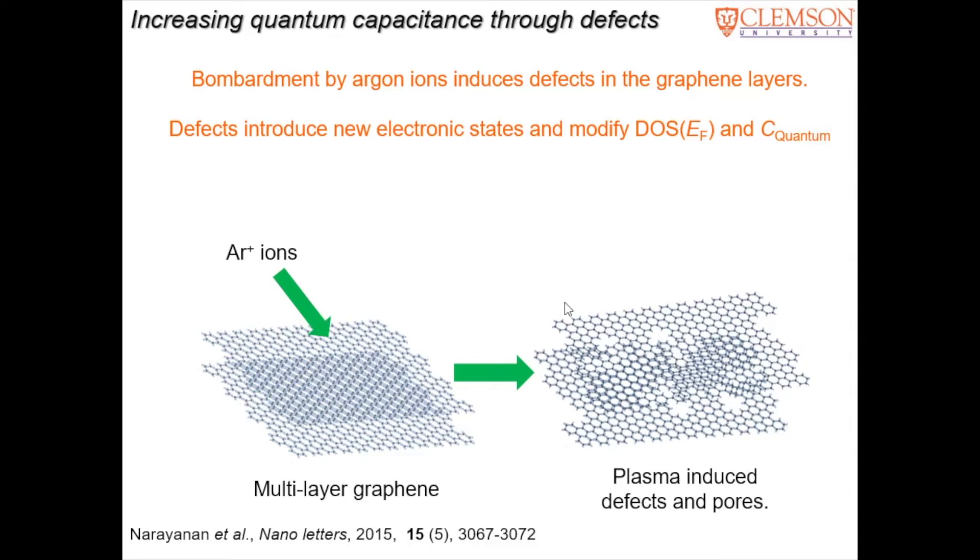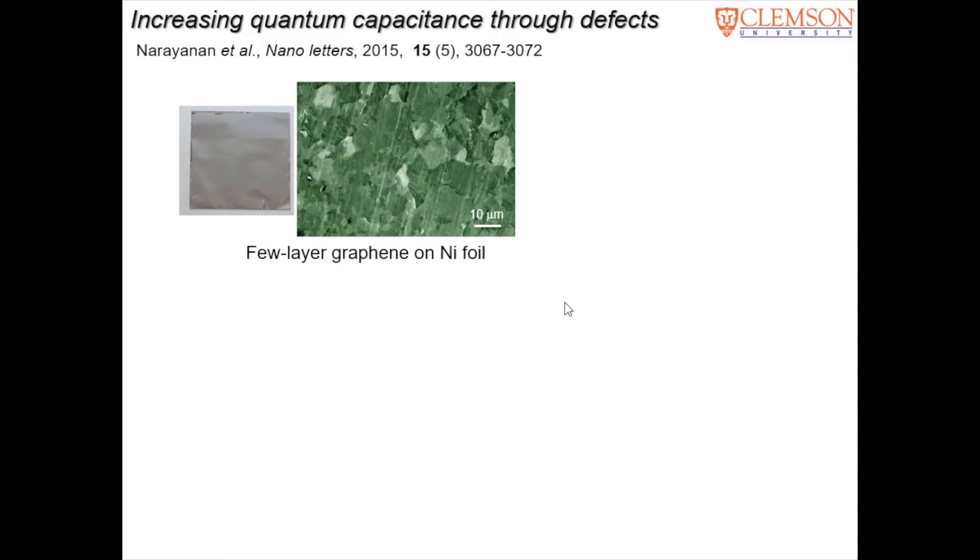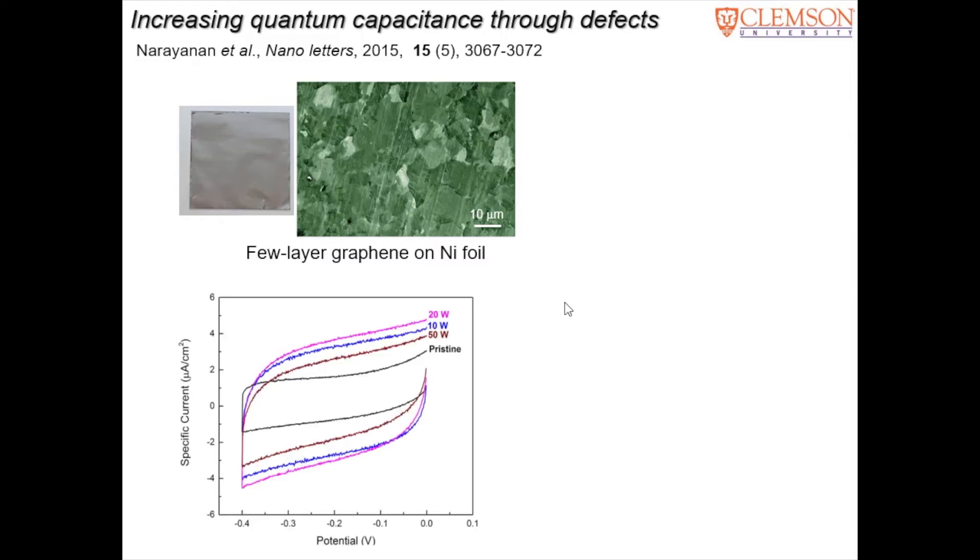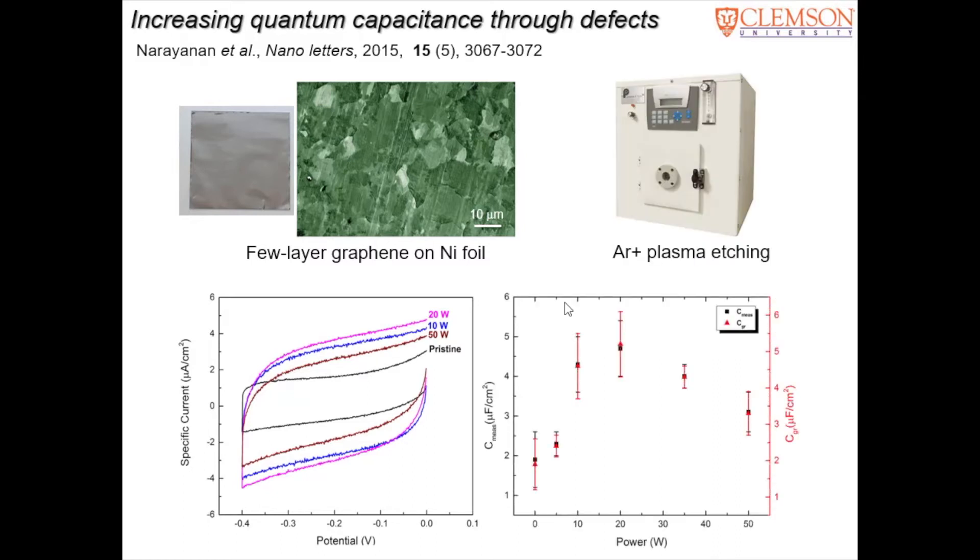So by controlling these defects, by choosing the right kind of defect, you can introduce more seats and hence increase the quantum capacitance. So we first did that with a few layer graphene grown on a nickel foil using chemical vapor deposition. And we used different powers of argon ions from 10 to 50 watts to induce these pores into carbon sheets.